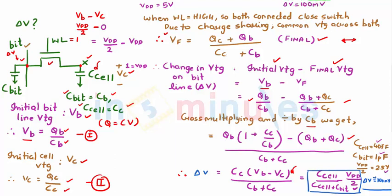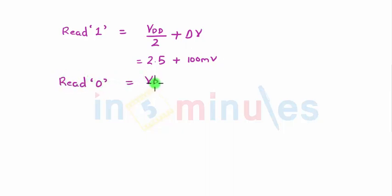In simple words, what this means is if we are doing a read 1, that means my bit line is going to be VDD by 2 initially plus delta V, and that delta V, if VDD by 2 is 2.5, then this delta V is nothing but 100 millivolts. And if we are doing a read 0, initially the bit line is VDD by 2 minus delta V. It is nothing but 2.5 minus 100 millivolts.